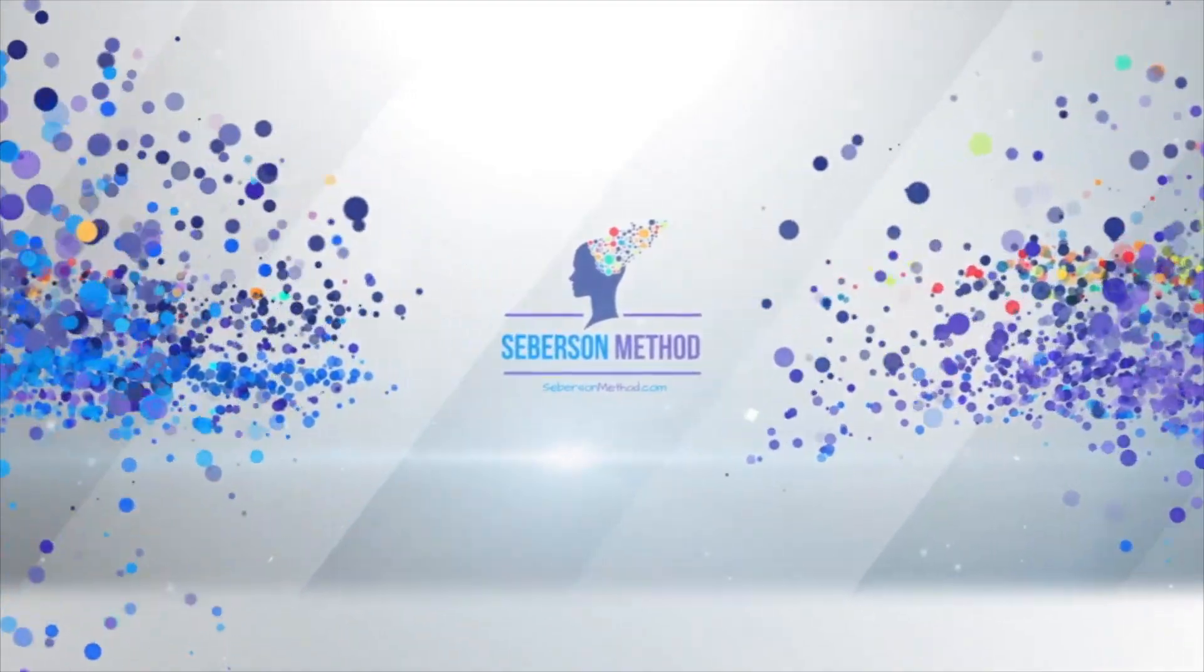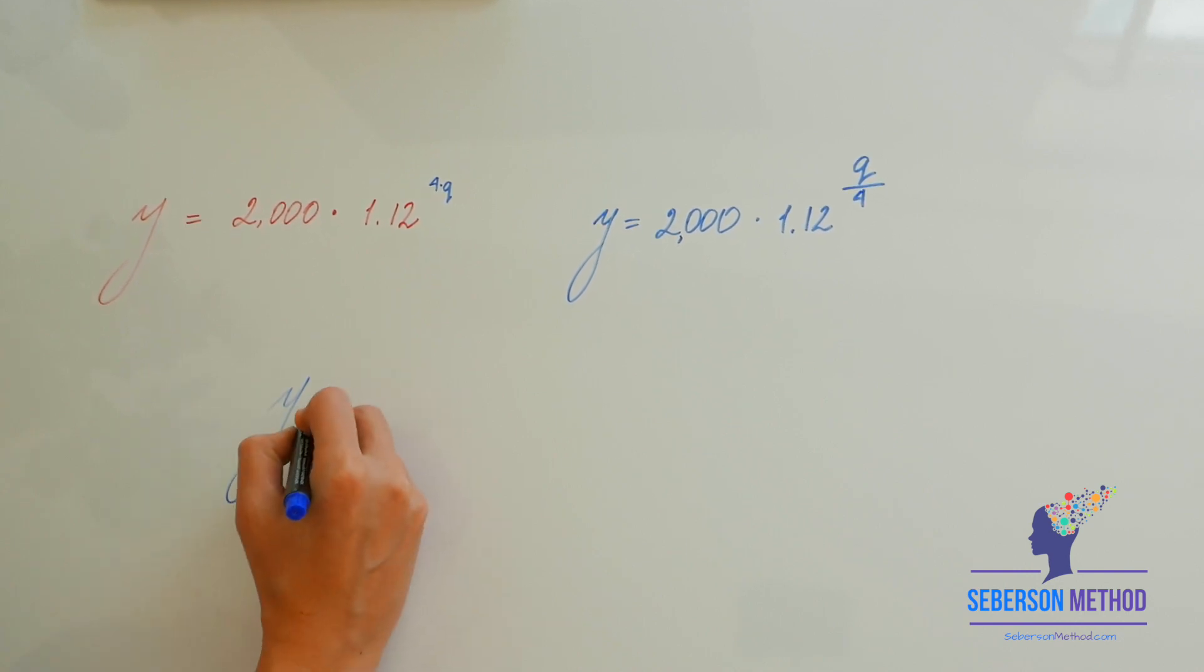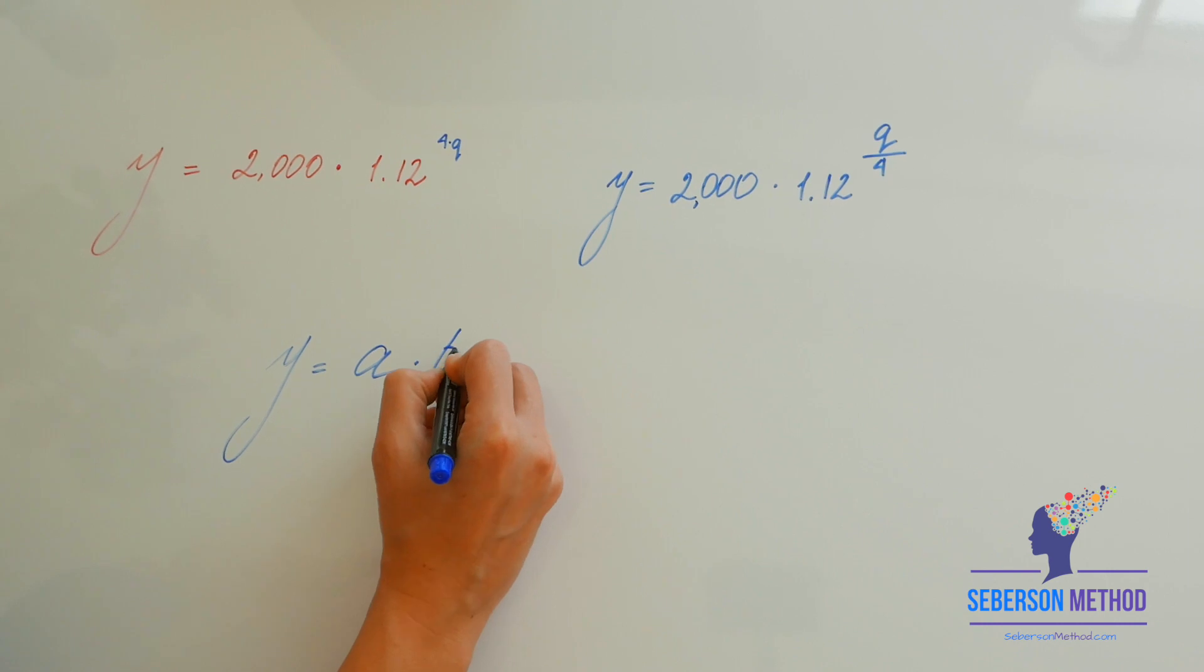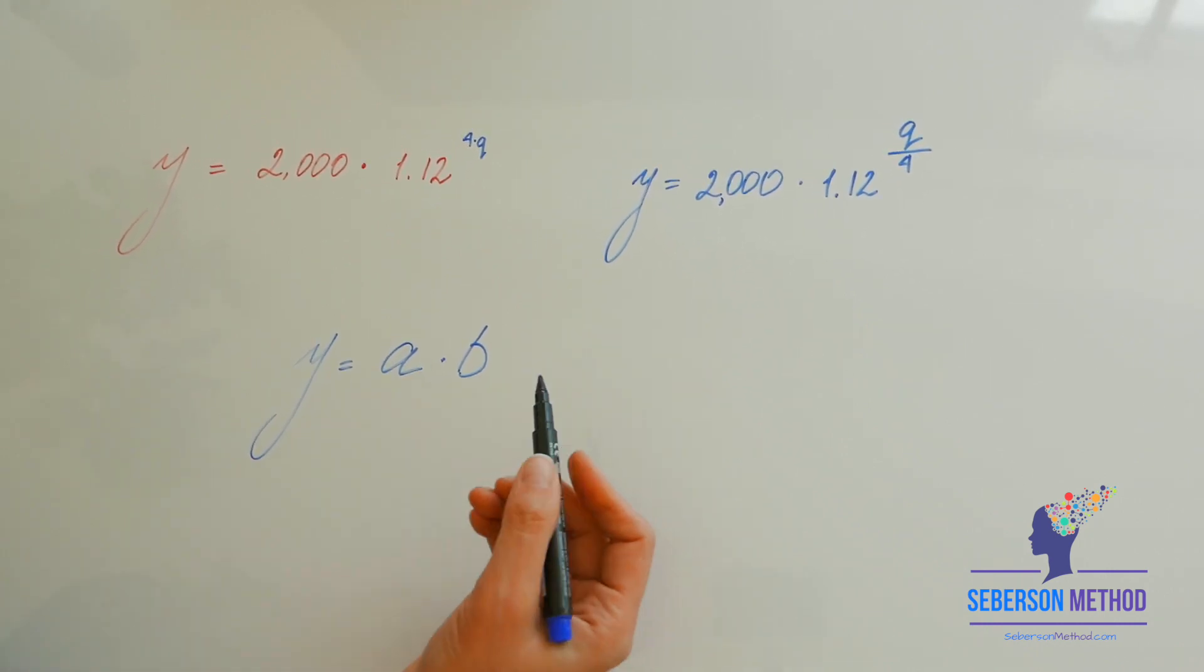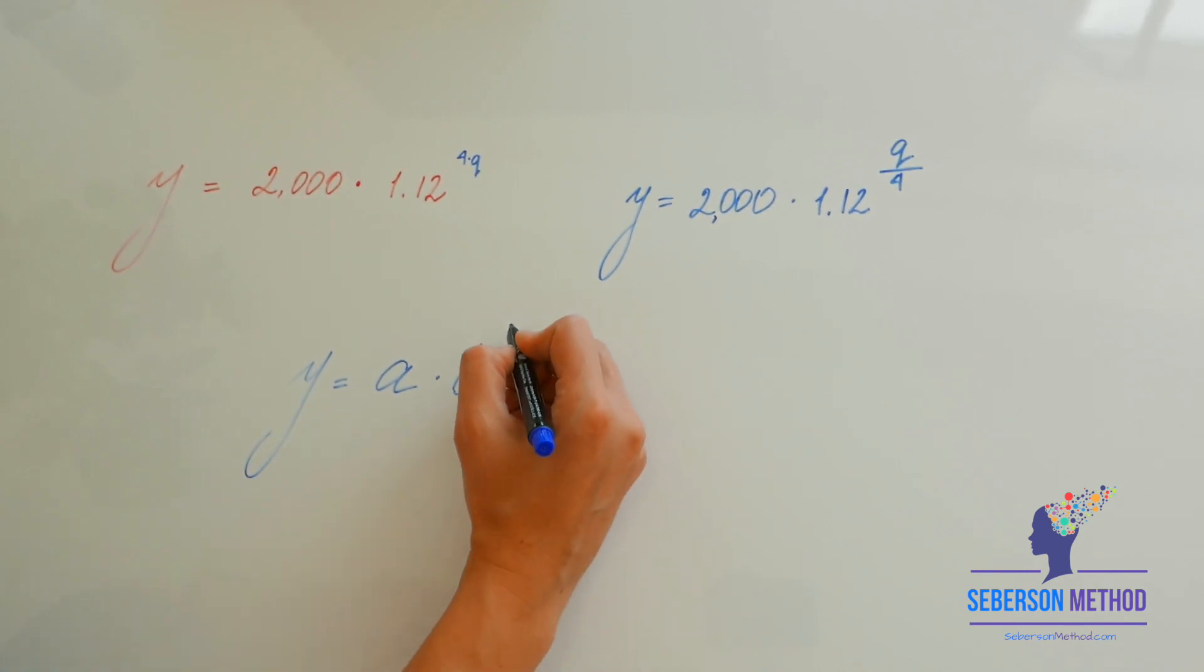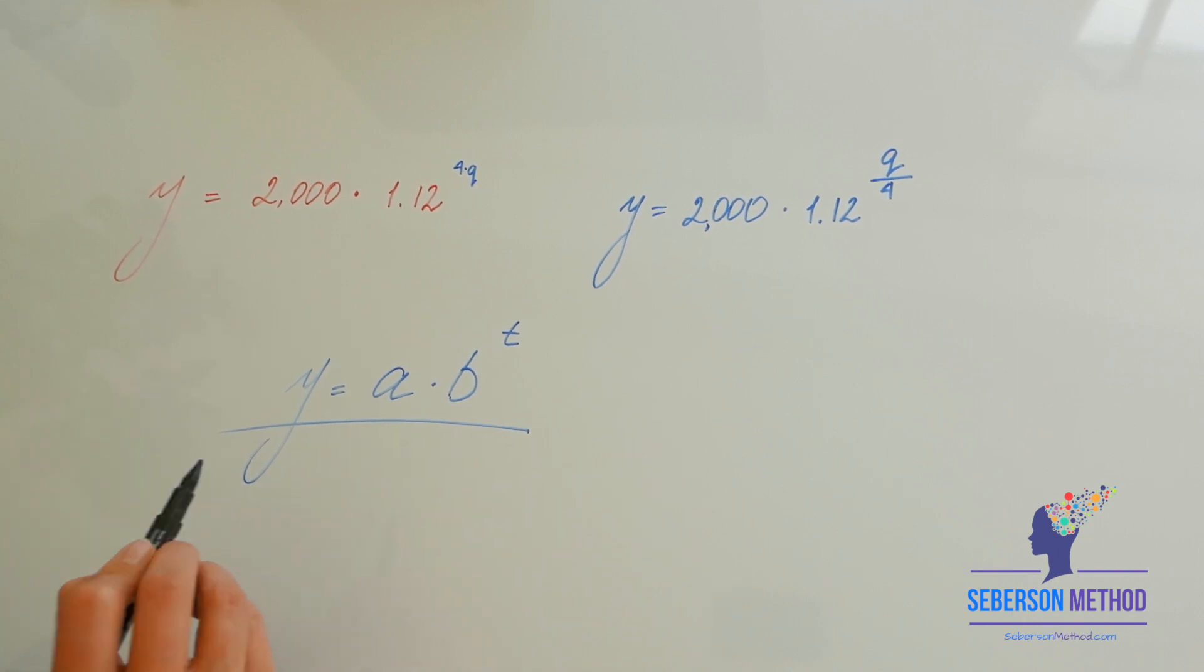Let's talk about exponential functions, shall we? So many of you are familiar with a basic exponential function. It looks like this: Y equals A, which is your initial value, B, which is your rate. If B is greater than 1, then it's growth, and if B is less than 1, then it's decay. And then there is T, which is your time. To many of you, this is clear.